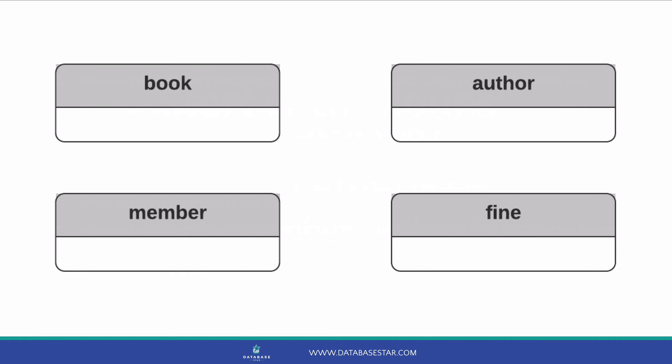We only have the names for now: book, member, author and fine. It's up to you whether you name them singular, such as book or member, or plural, such as books or members. There are pros and cons either way, and it comes down to personal preference. I prefer the singular name where possible, but if you want to use plural, then go for it.